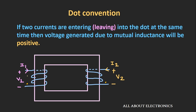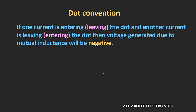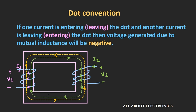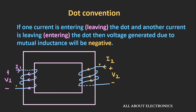Now let's see what happens when one current is entering the dot and another current is leaving the dot. If one current is entering and another is leaving the dot, the generated voltage due to mutual coupling will be negative. Taking the second example — flux Φ1 and Φ2 are cutting each other, so the induced voltage due to mutual coupling is negative. Suppose we put a dot at these two points; just by applying dot convention, we can easily find the polarity. As you can see, one current is leaving the dot while the other is entering, so the voltage due to mutual coupling will be negative.